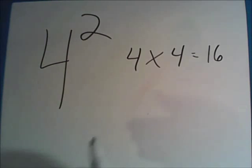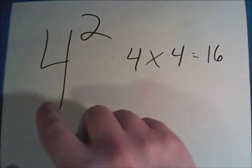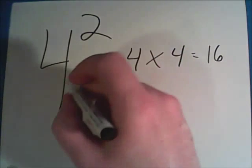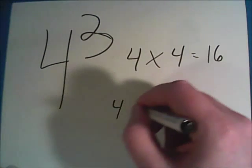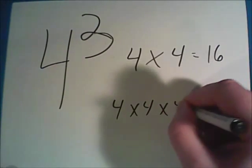Again, all the two tells us is that there are two fours present. As long as you can remember to multiply your two fours, you're going to be doing very well. If we change this from four to the second power into four to the third power, now we're going to have four times four times four.